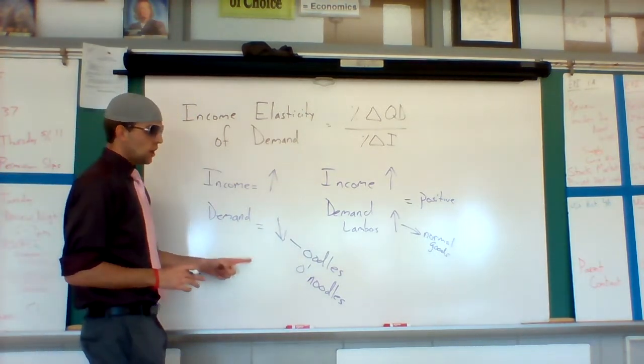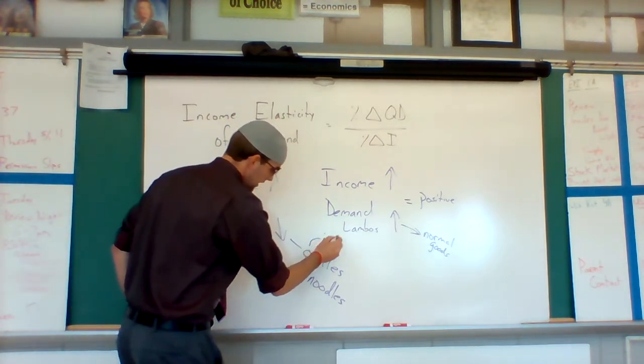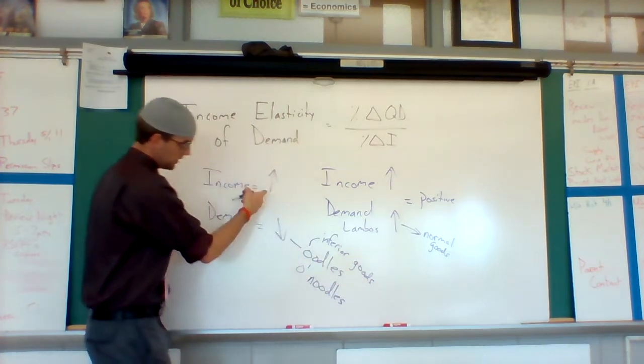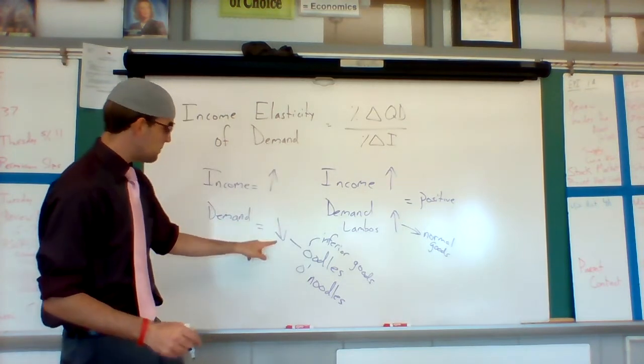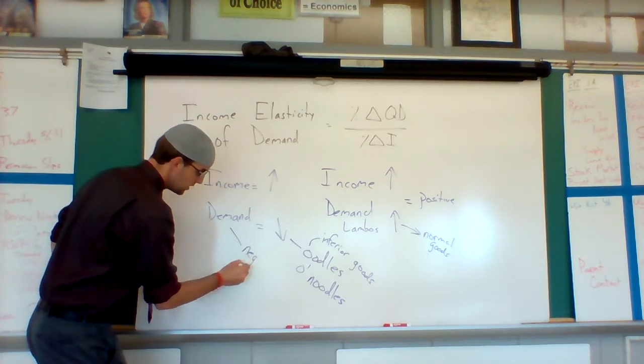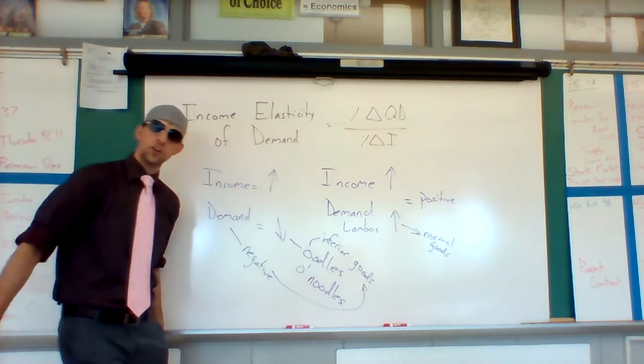So these are not normal goods. These would be inferior goods. And you'll notice that if the income goes up, so that's positive, the demand goes down, this is negative. When you get a negative number for your income elasticity of demand, you have an inferior good.